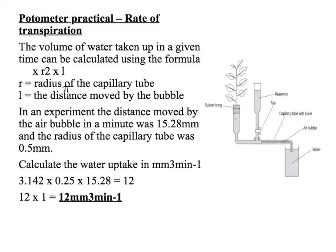In this experiment, the air bubble moved 15.28 millimetres in one minute, and the radius of the capillary tube was 0.5 millimetres. So we need to calculate the water uptake in millimetres cubed per minute. Pi times the radius squared (0.5 × 0.5 = 0.25), times 15.28 — the length the air bubble moved — gives 12. We then divide by 1 minute, so 12 divided by 1 is 12 millimetres cubed per minute.